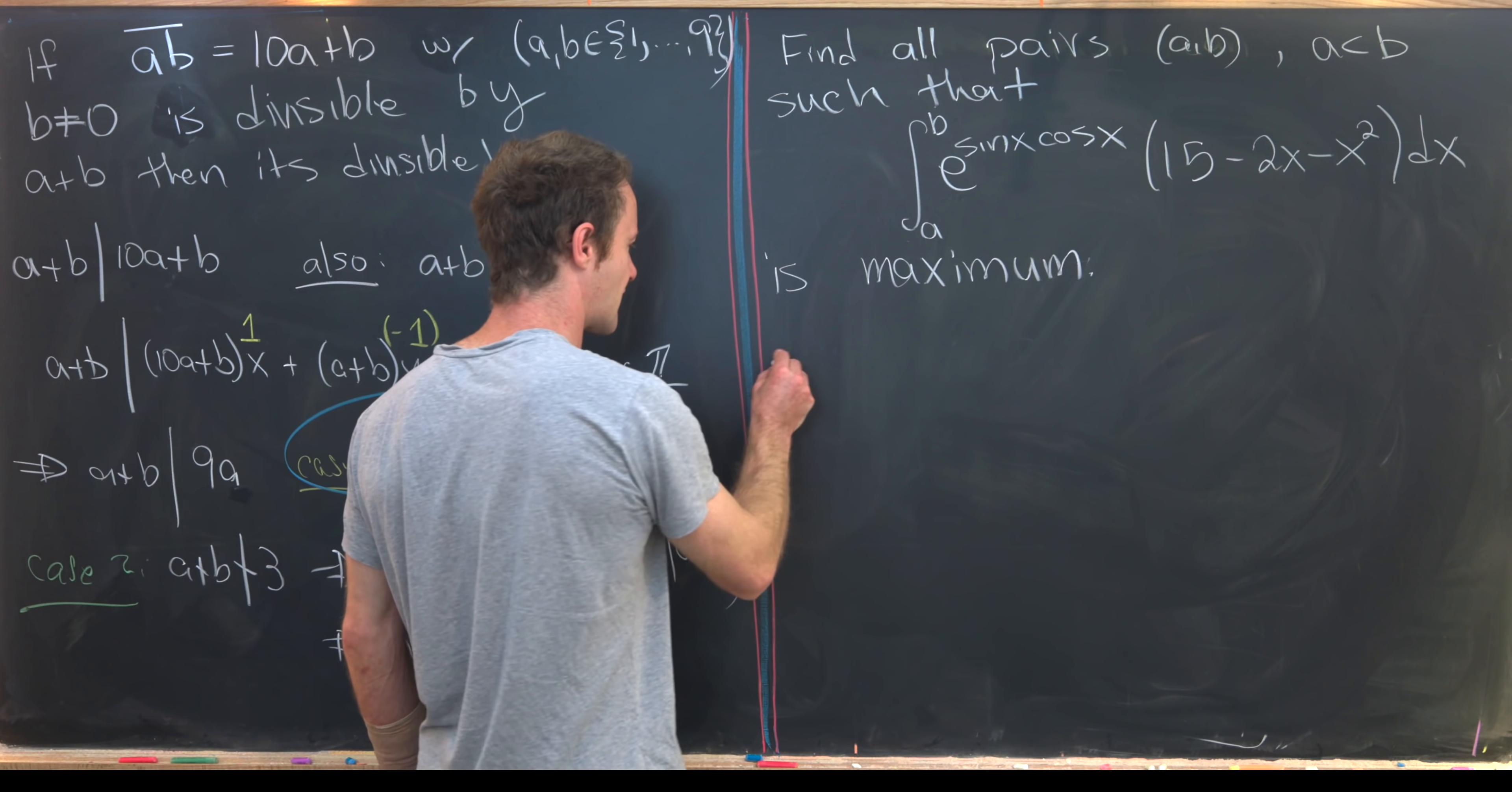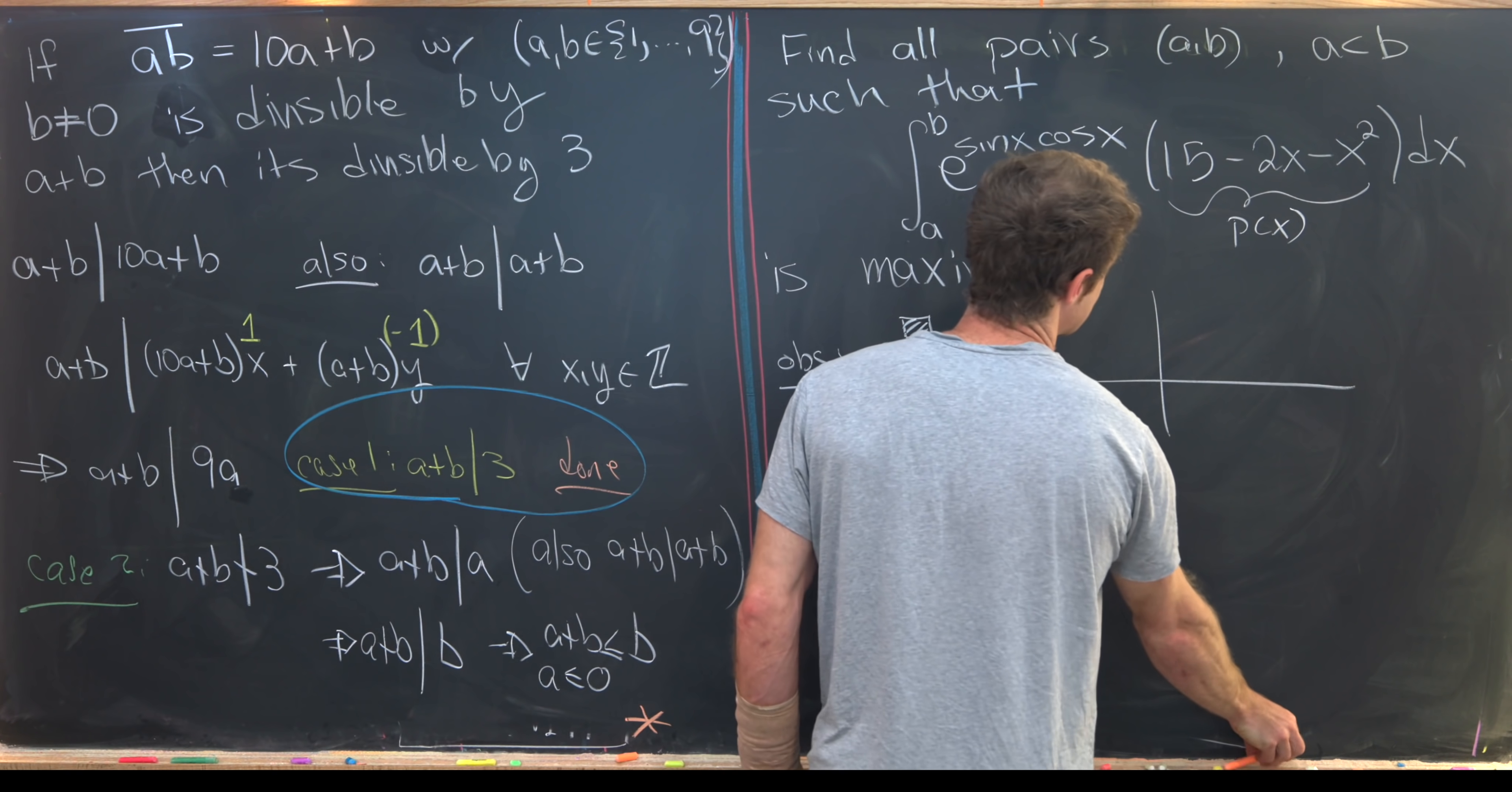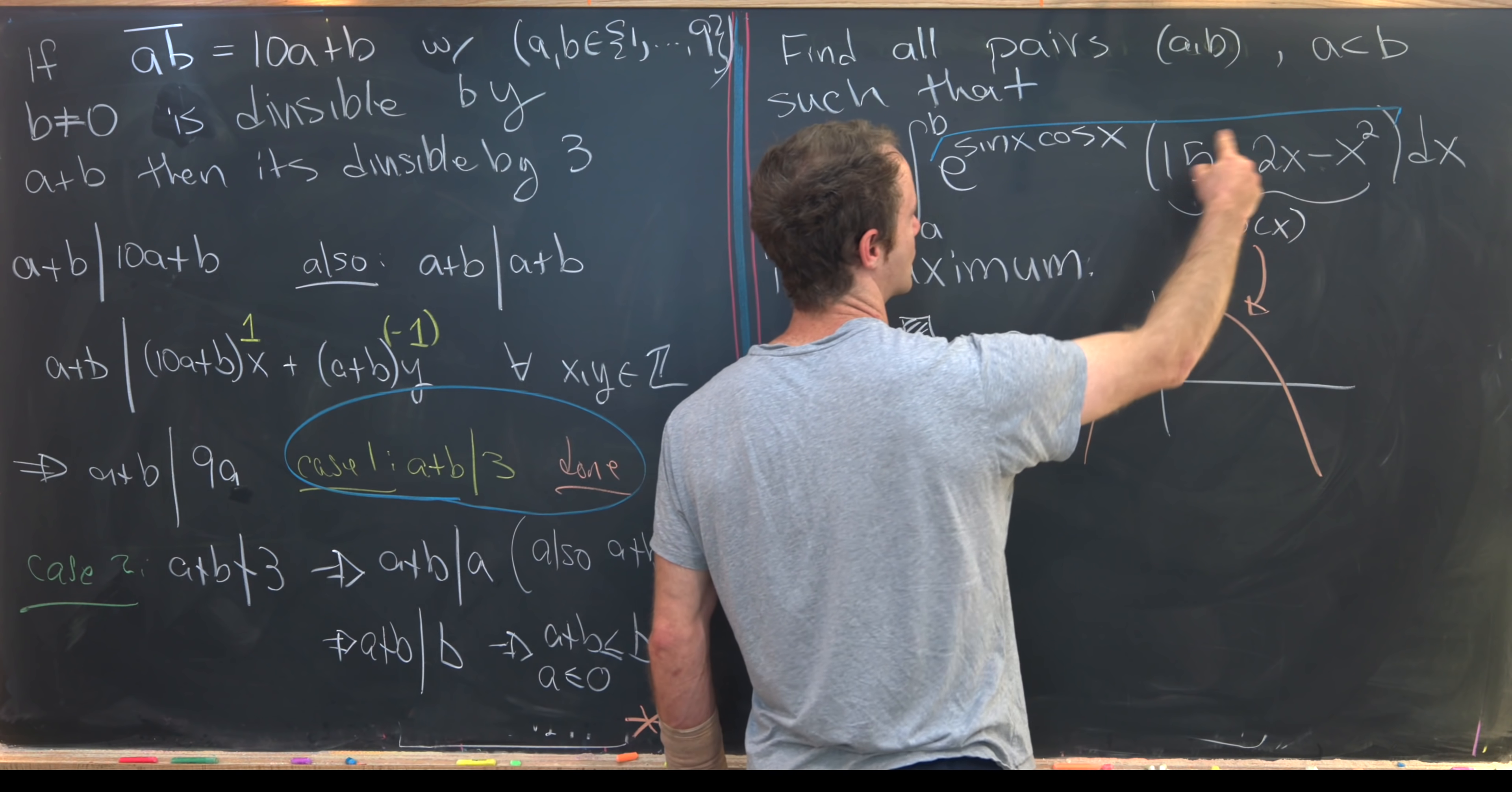Okay. So let's maybe start with a couple of observations. So the first observation is that e to anything is always positive. Okay. Another thing that we want to notice is that if we take this quadratic polynomial, which I'll call p of x, and we graph it, we'll see that it's a downward facing parabola. So it's a downward facing parabola because we've got a minus sign attached to the x squared. So that means it looks a little bit something like this.